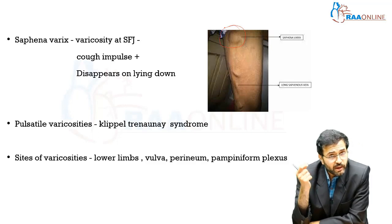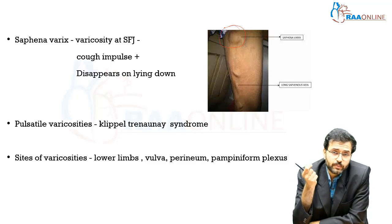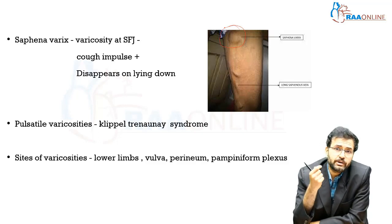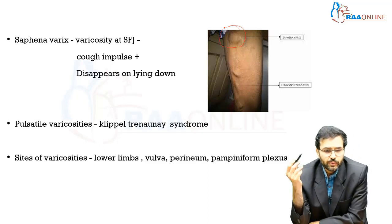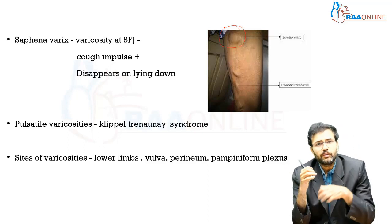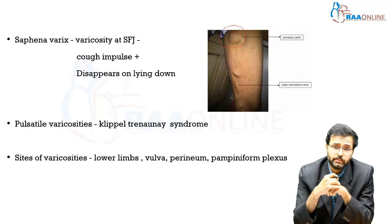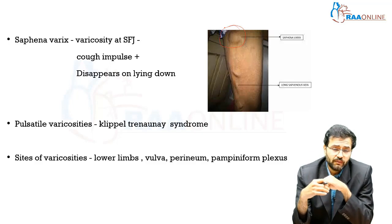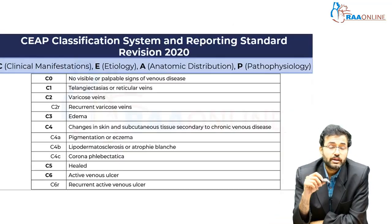Sometimes varicosities can have pulsatility associated with them, especially in a syndrome called Klippel-Trénaunay syndrome. Varicosities can also involve multiple areas other than the lower limb — they can involve the vulva, the perineum, the pampiniform plexus, and so on.